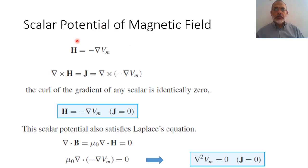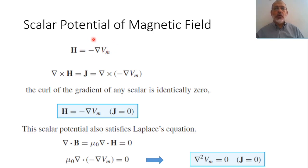Scalar potential of magnetic field. We have already seen that the electric field can be represented as minus the gradient of the potential: E = -grad(V). In a similar way, we can say that the magnetic field H equals minus the gradient of the magnetic scalar potential Vm. The magnetic field can be represented as a scalar potential Vm and also a vector potential.